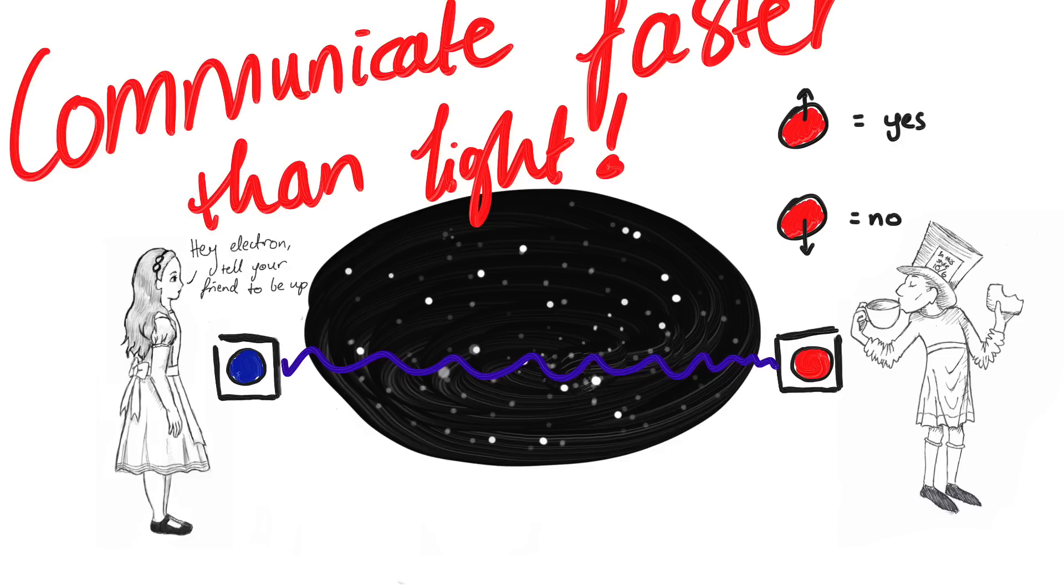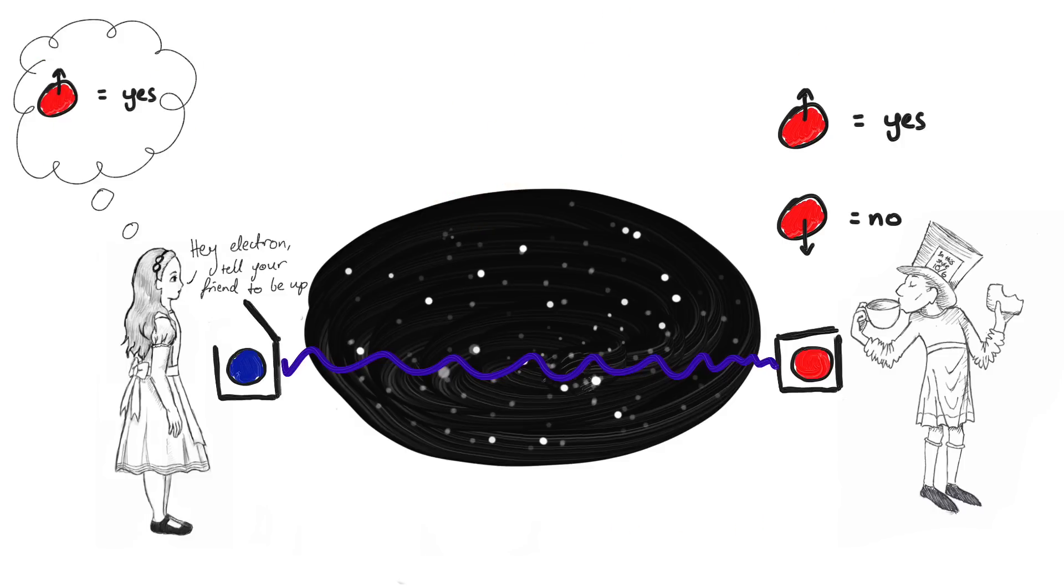But obviously, that won't work because no matter what she does, her own outcome is random, and since Bob just gets the opposite, his outcome is just as completely random as well. So this scheme doesn't work.